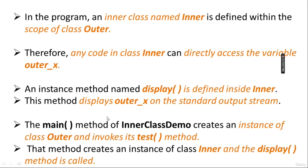The inner class named Inner is defined within the scope of class Outer. Therefore, any code written in class Inner can directly access the variable outerX — inner classes can access the variables of the outer class. An instance method named 'display' is defined inside Inner. This method displays outerX on the standard output stream using System.out.println.